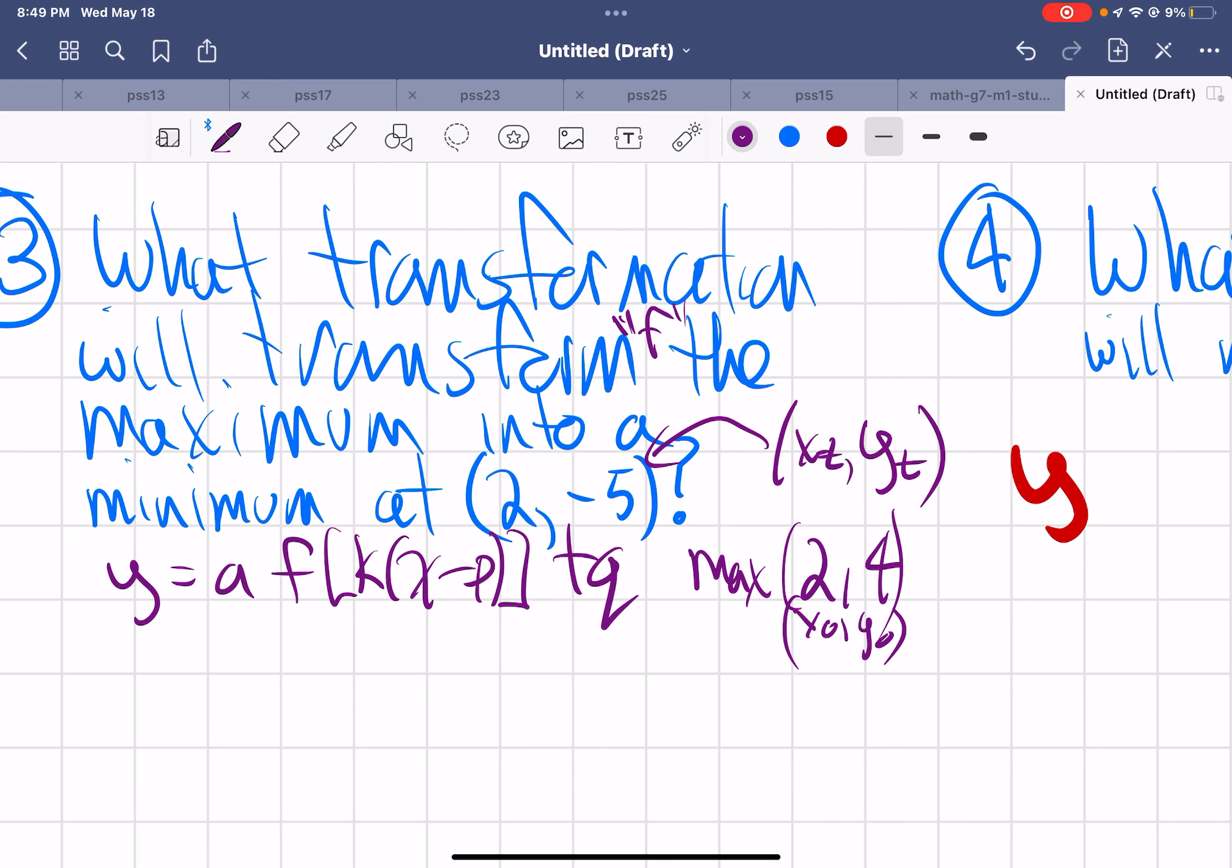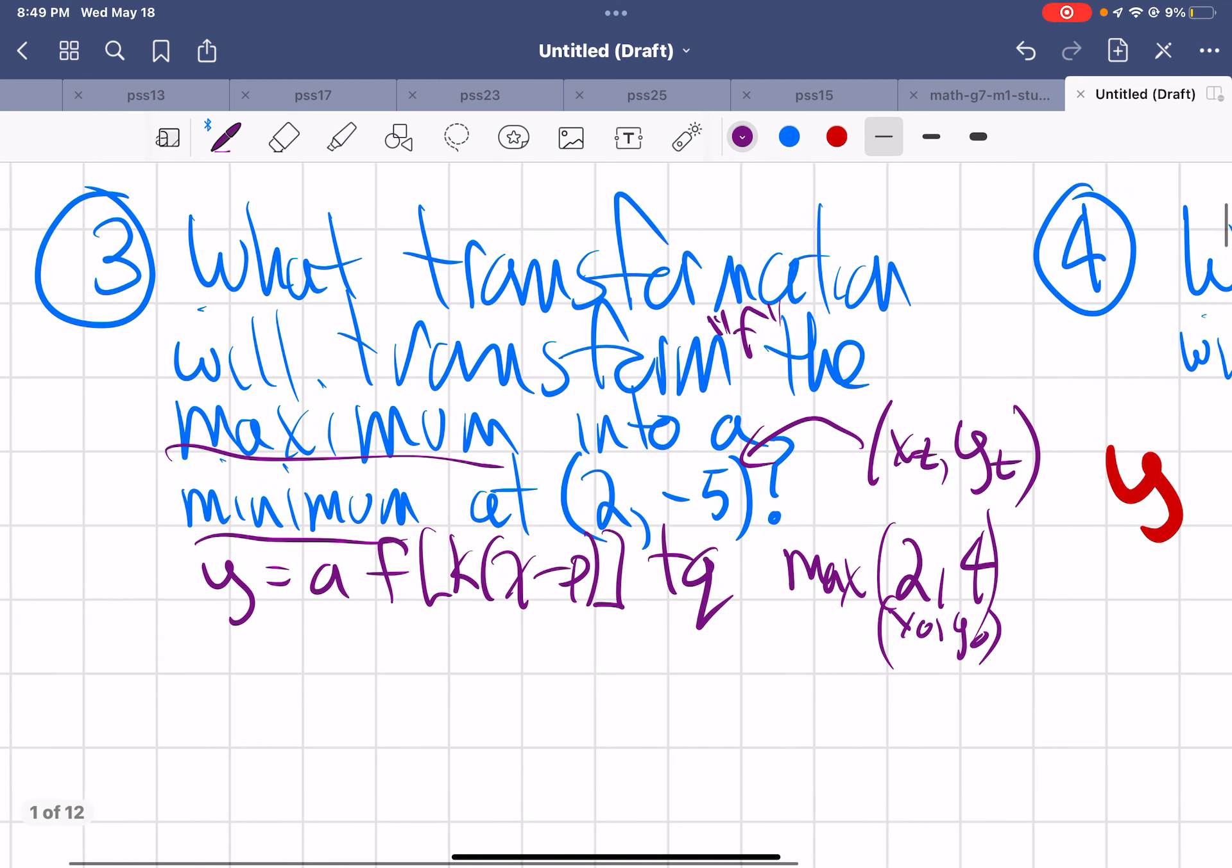Well, the first thing I'm going to look here is I'm changing a maximum into a minimum. So a maximum looks like this. The minimum then looks like this. Right away, I know it's a form of reflection.